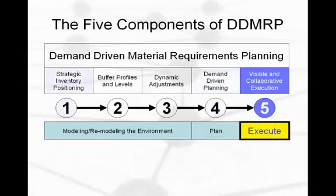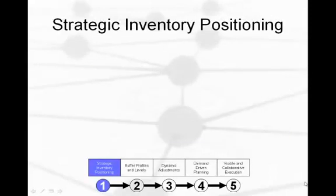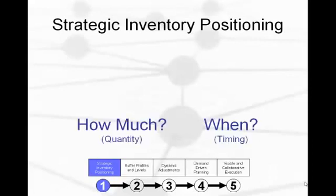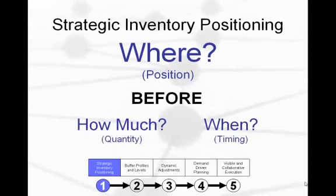Now let's talk about the first component: strategic inventory positioning. Most planning personnel and the tools that they use are constantly seeking the answers to two questions — how much and when. These two questions can cause huge disagreements and friction inside many companies. Typically, finance wants less inventory while sales may clamor for more. In reality, these questions are secondary in nature. The primary question to be answered about inventory is: where? Where in our chain of dependencies does it make sense to hold inventory? Without answering this question first, the organization sets itself up for constant dissatisfaction with regard to its inventory performance.